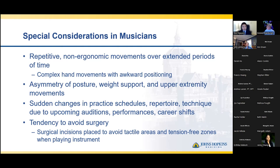There's an asymmetry of posture and weight support — one limb typically sees a little bit more weight and burden than the other, and oftentimes there are asymmetric movements. Additionally, there are sudden changes in practice schedules or increases in the need for practice due to upcoming performances, auditions, and changes in career. There are various types of repertoire where some passages are more slow and some are very intense and rapid. And there's a wide heterogeneity in technique — even though many musicians are taught standardized techniques for their instruments, they tend to take on their own habits and preferences. Not every musician is the same, even if they play the same instrument.